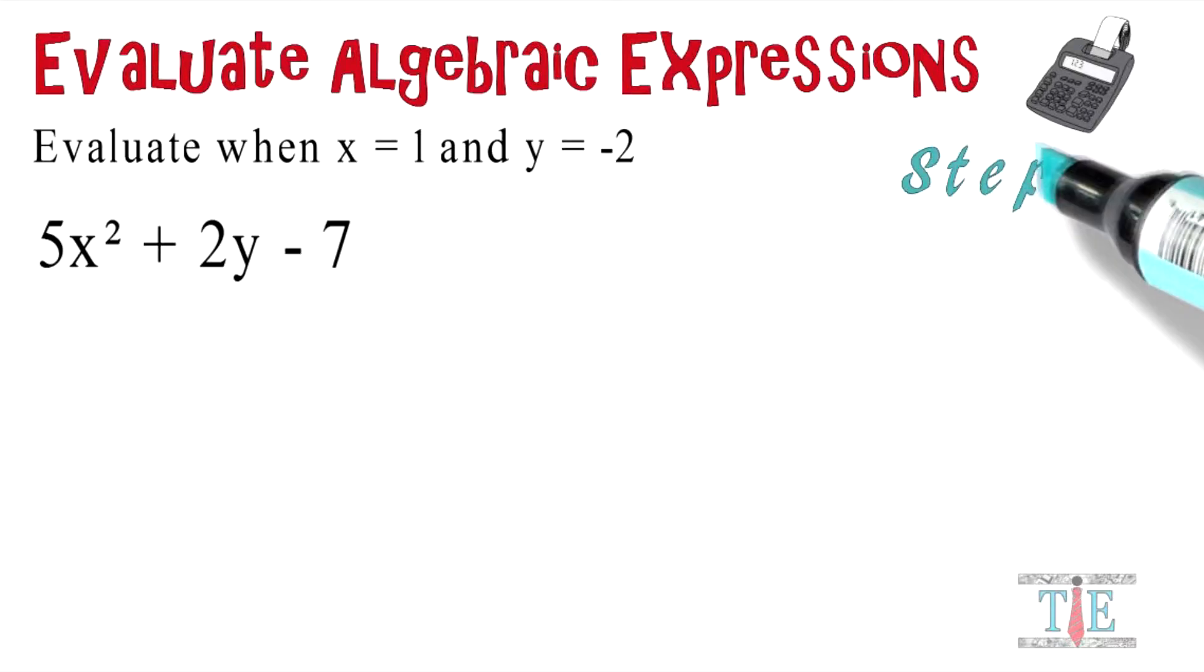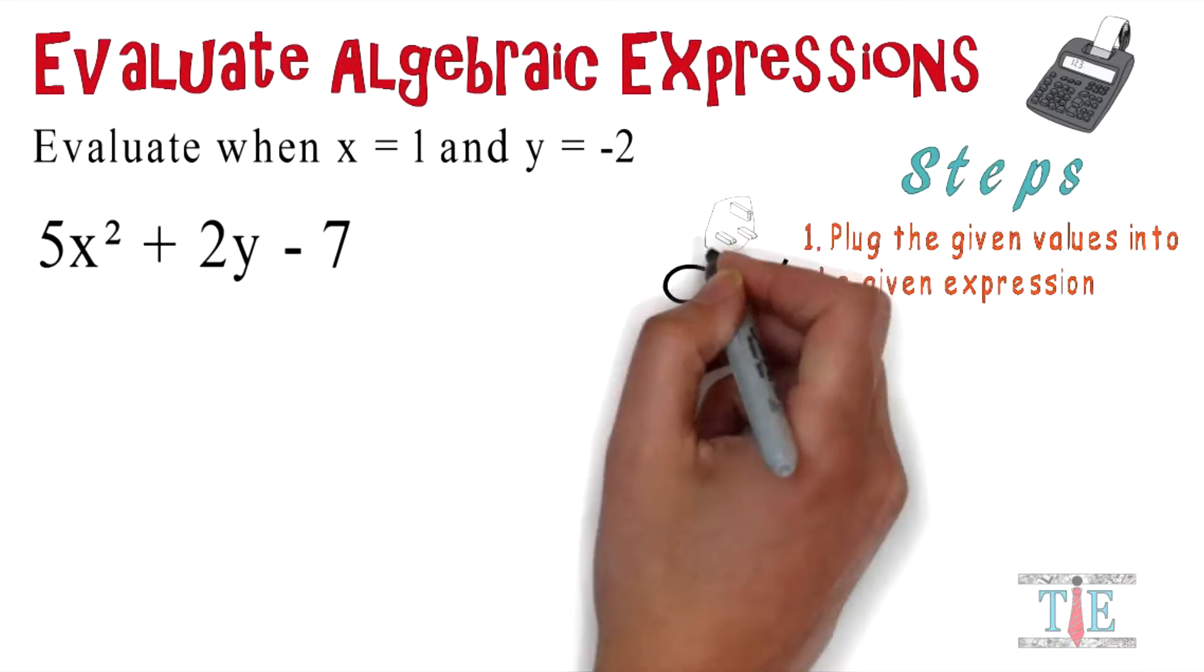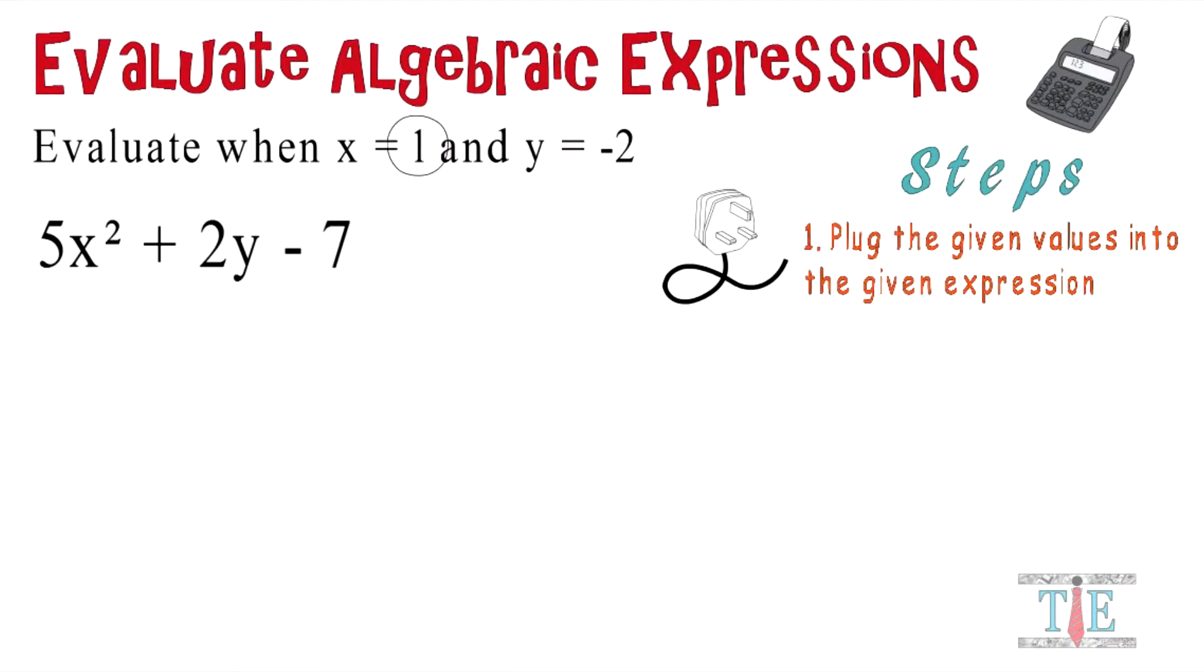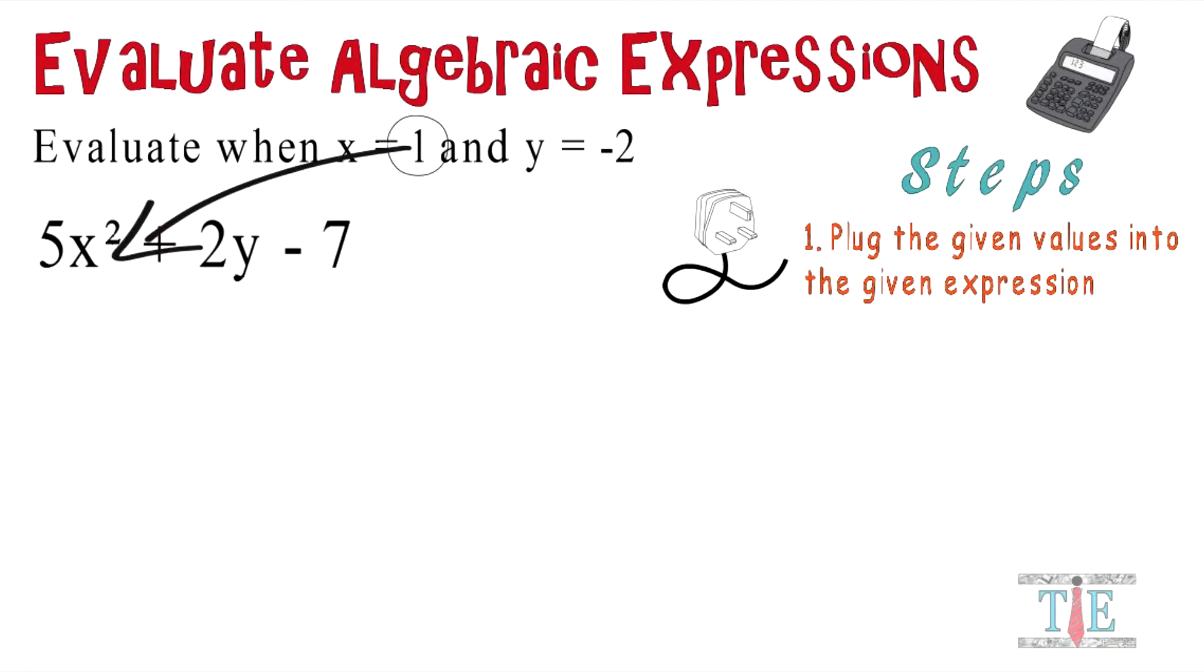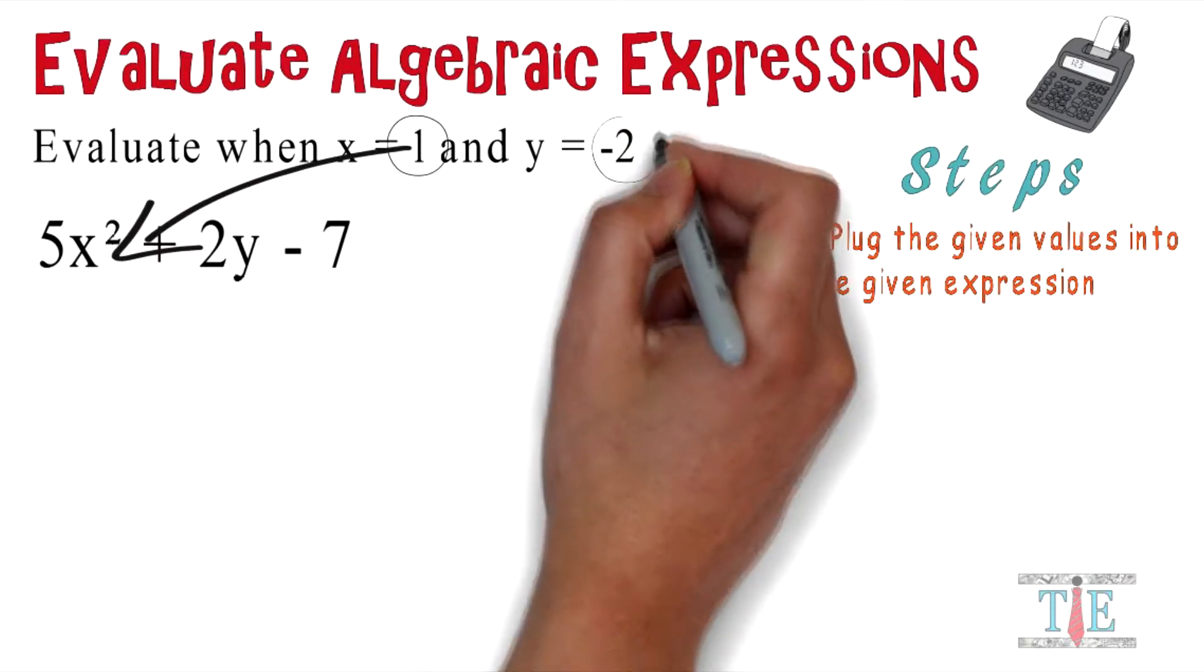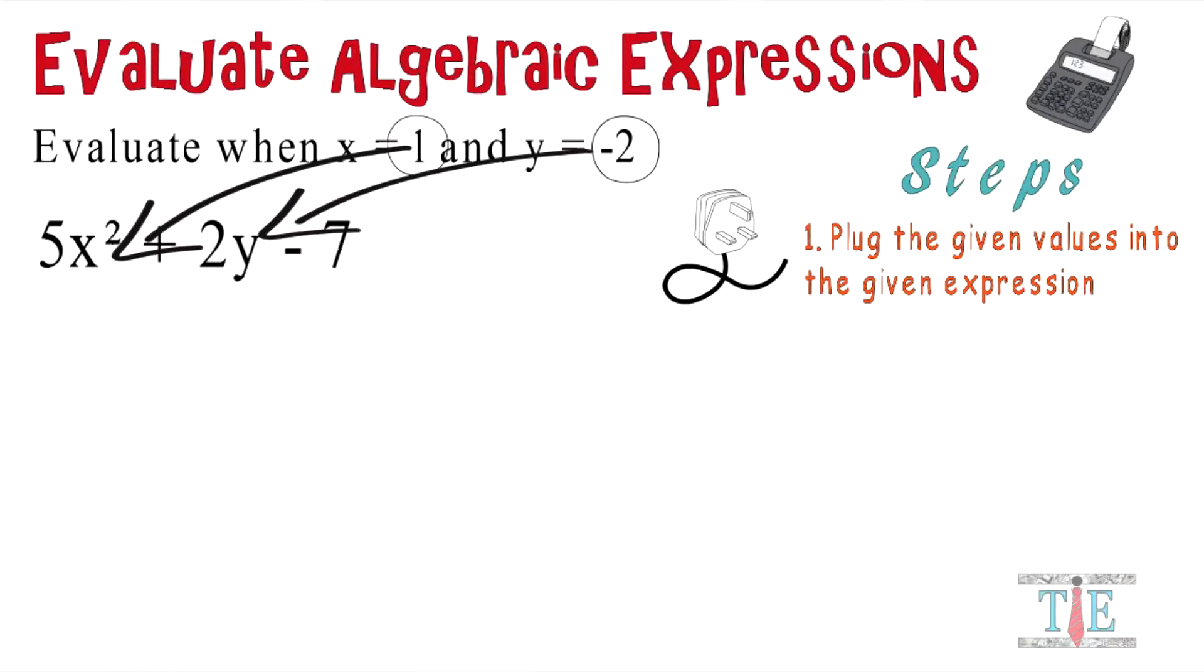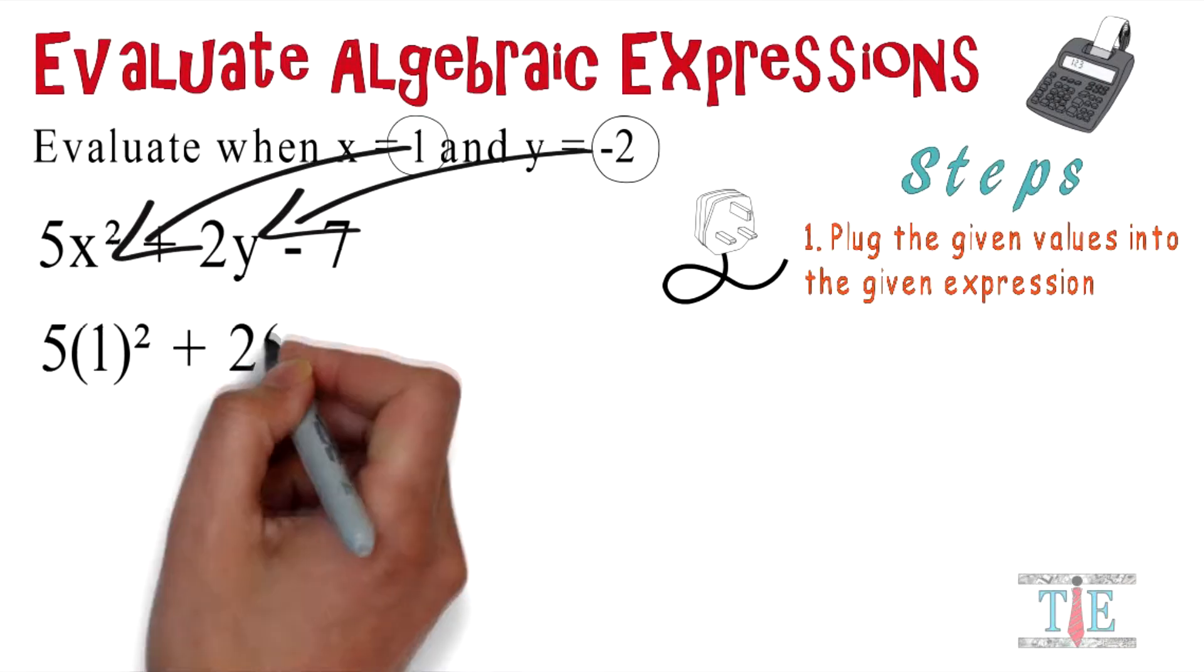I'll provide some steps to help you along the way. Number one: plug the given values into the given expression. So this is basically just a plug-in. Let's take one. What are we going to do? It says x equals 1, so we're going to plug that in for x. It also says y is negative 2, so let's take that negative 2 and we'll plug it in for y.